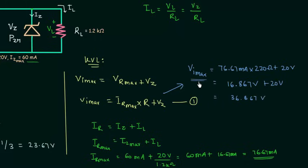This is the value of VI max. So the range of VI is equal to 23.67 volts to 36.867 volts. This is the answer of this numerical problem. This is a very easy problem. The only thing you should know is the formula for VI minimum and VI maximum. If you don't remember the formula, you can easily derive them. I have already explained how to obtain the condition for minimum input voltage and condition for maximum input voltage.